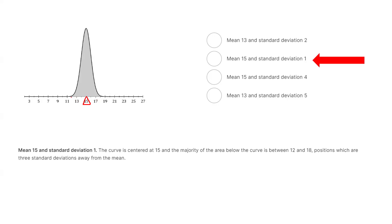The correct answer is two. We don't see that much variability here. The balancing point is 15 and you don't have a wide graph — this is a very narrow graph. What's the meaning of that? As you can see, the standard deviation or variability is very small.